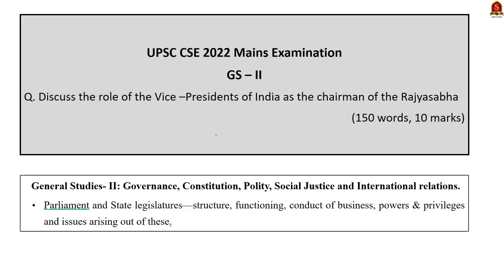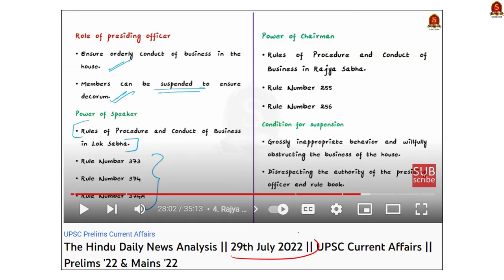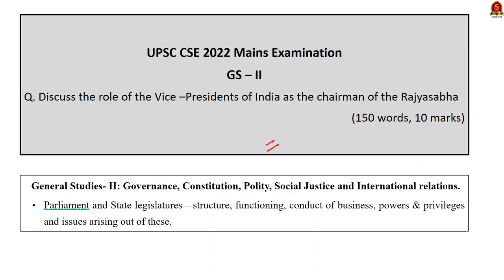Question number 4 in GS Paper 2: 'Discuss the role of the Vice President of India as Chairman of Rajya Sabha.' The examiner is asking for the various roles played by the Vice President while functioning as Chairman of Rajya Sabha. In our 13th September 2022 Hindu News Analysis, we covered the functions of the Speaker of Lok Sabha — the Vice President as Chairman of Rajya Sabha performs similar functions. In our 29th July 2022 Hindu News Analysis, while covering the suspension of members of Rajya Sabha, we again saw the powers of the Chairman of Rajya Sabha. These two videos are sufficient to answer this question.